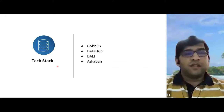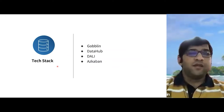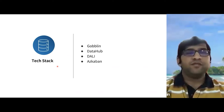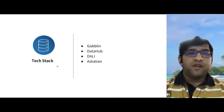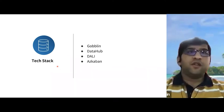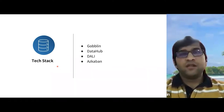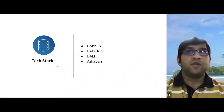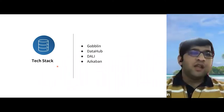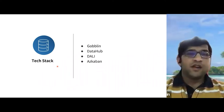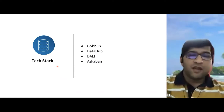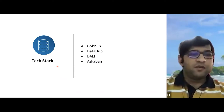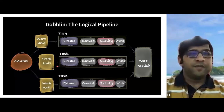Now let's look at some of the technology stack — what are the key technologies we are using to realize the data deletion problem. We mostly use key open source technologies, wherein Goblin provides the ETL infrastructure, Data Hub provides the metadata discovery, DALI is the data abstraction layer, and Azkaban plays a key role in managing and scheduling flows for us. Let's deep dive into all these technologies.